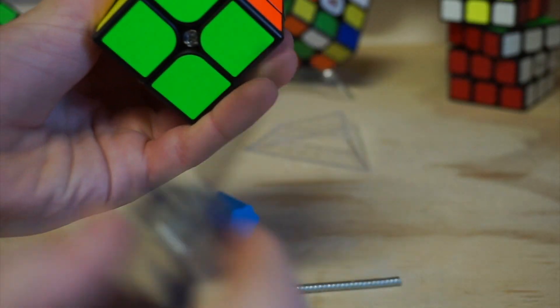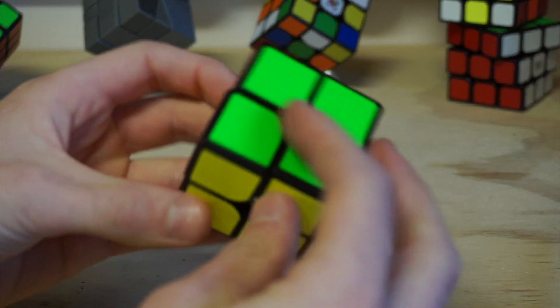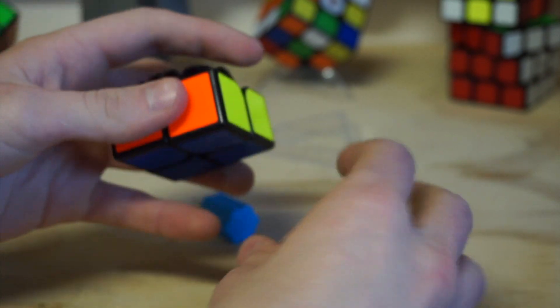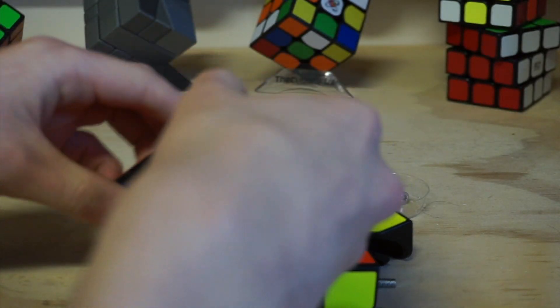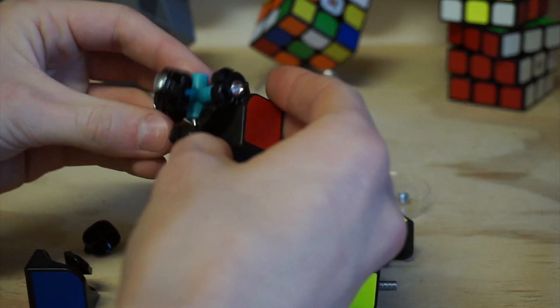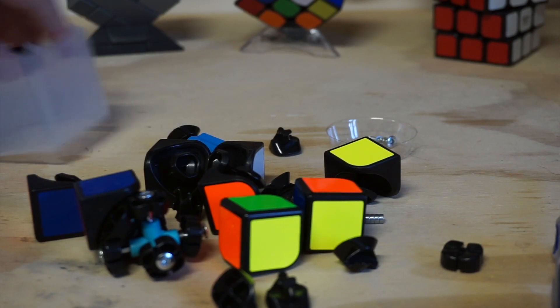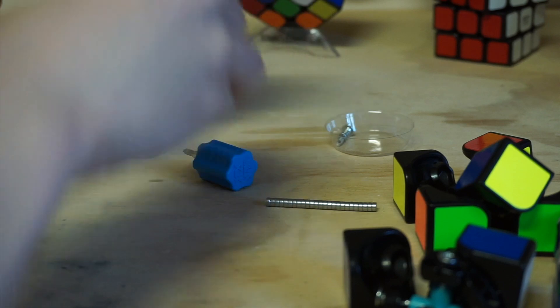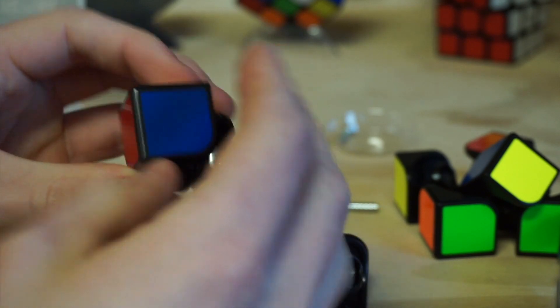So I started out by unscrewing the cube and taking all the pieces apart. Then I took out all the edges and sorted the pieces into the corners, or the pieces which I was going to modify and the pieces which I was just going to leave the same, which was basically the corners and all the rest of the pieces.